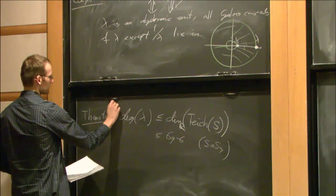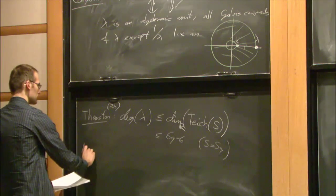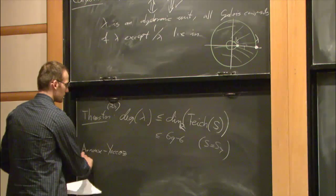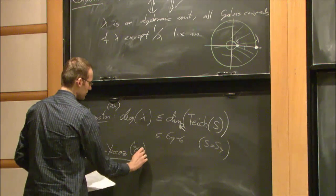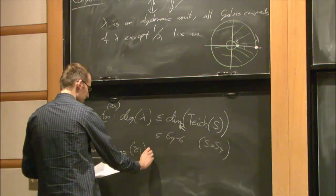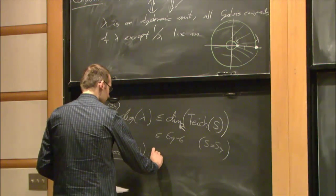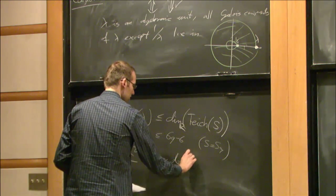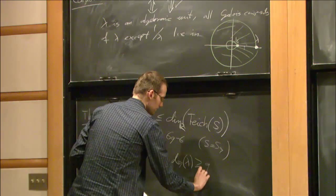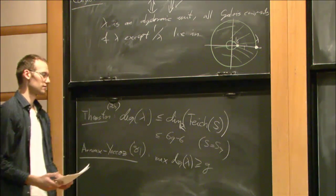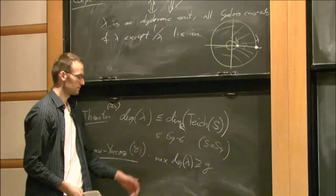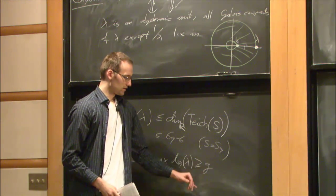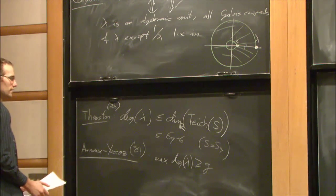This upper bound of 6g minus 6 is from the 70s. Then Arnoux and Yoccoz in 1981 gave examples showing that the maximum degree of lambda is at least g — still far from 6g minus 6, but at least increasing linearly with the genus.